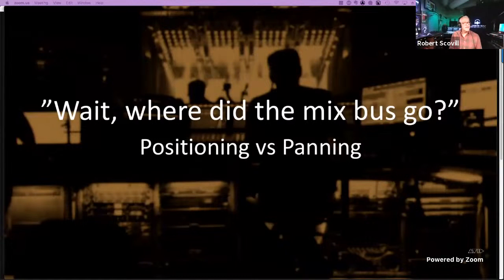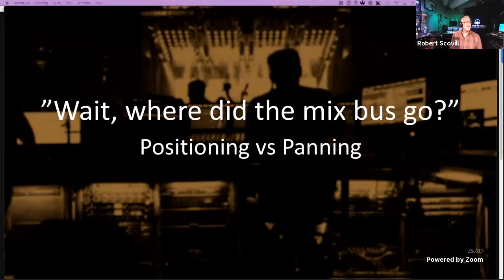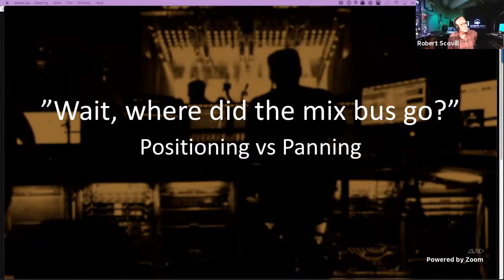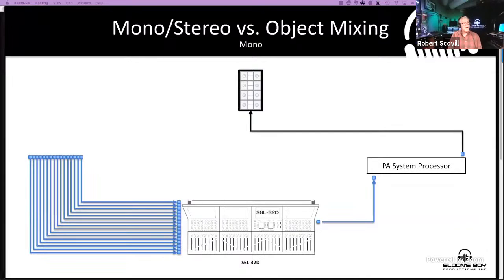Today we're going to focus on object-based mixing — the console end of things. We talked about the speaker system, the deployment, how to transport audio out to these systems, how to spatialize it. Now we're going to talk about what happens at the console end, which is just about as meaningful and as complex as all of it. We're going to define the concept of object-based versus panning and what those mean for different speaker systems.